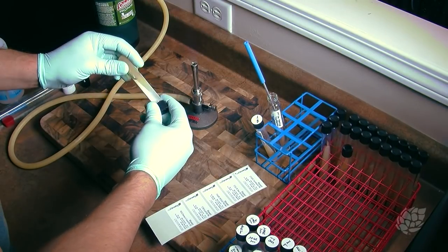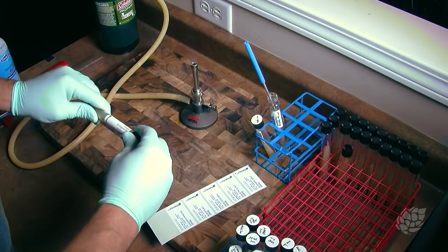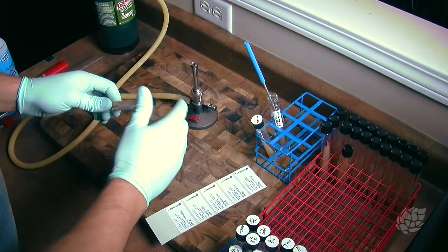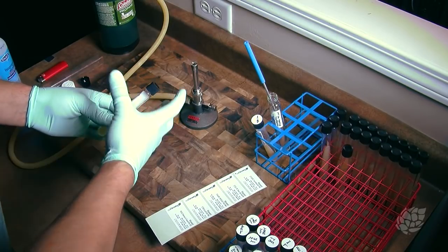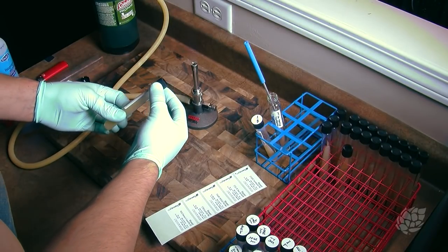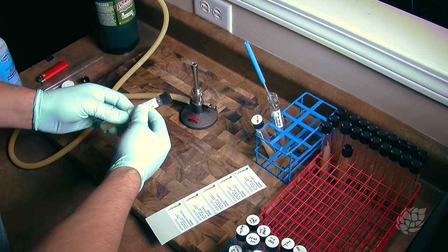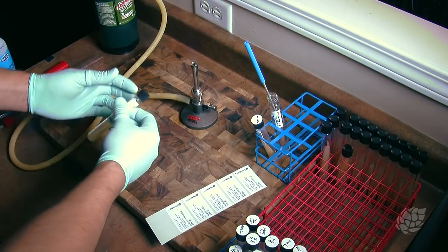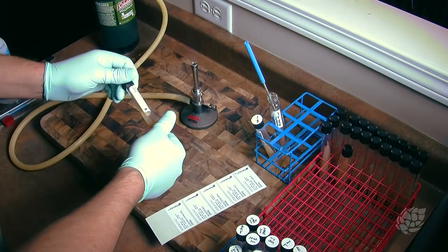Essentially when this has been inoculated like that, you can just keep the cap just a little cracked on it. Not insanely loose, but just enough for any CO2 to get out of there. And what we're going to do is incubate this until we see some growth on there and then we can return it to the fridge.